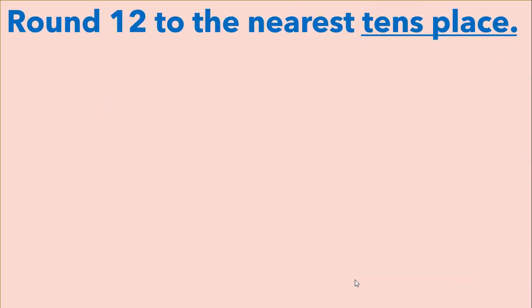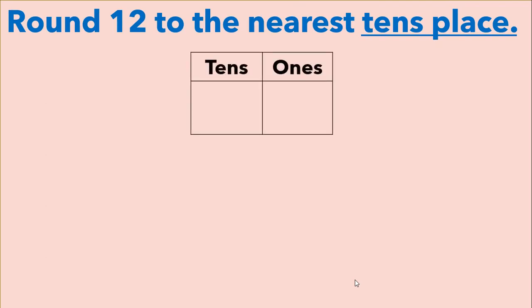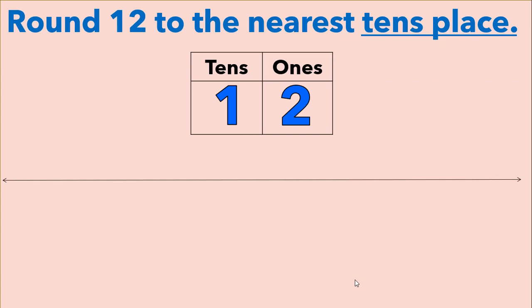Let's try to solve to the nearest tens place. First we're going to start with a place value chart and inserting our digits into the place value chart. Here we can see that we have one ten. When we create our number line, we're going to start with one ten or ten ones. One more ten than one ten is two tens or twenty ones.